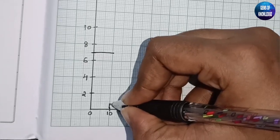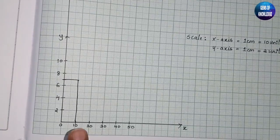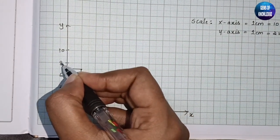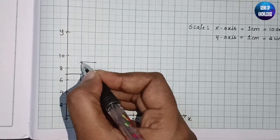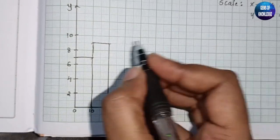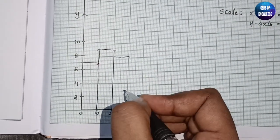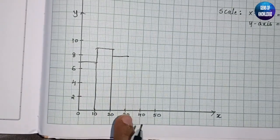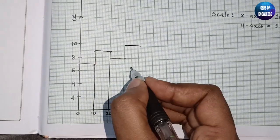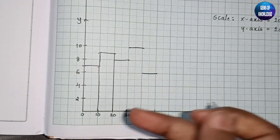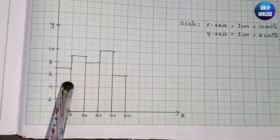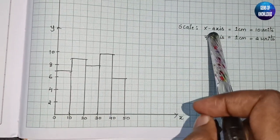Drawing each bar: 0–10 at height 7, 10–20 at height 9 (between 8 and 10), 20–30 at height 8, 30–40 at height 10, and 40–50 at height 6. Join the lines for each interval to form the bars. There should be no space between bars in a histogram. The completed graph gives us the histogram.